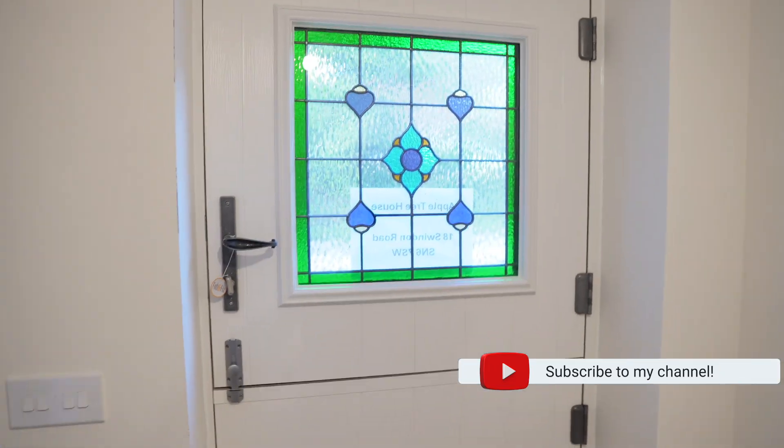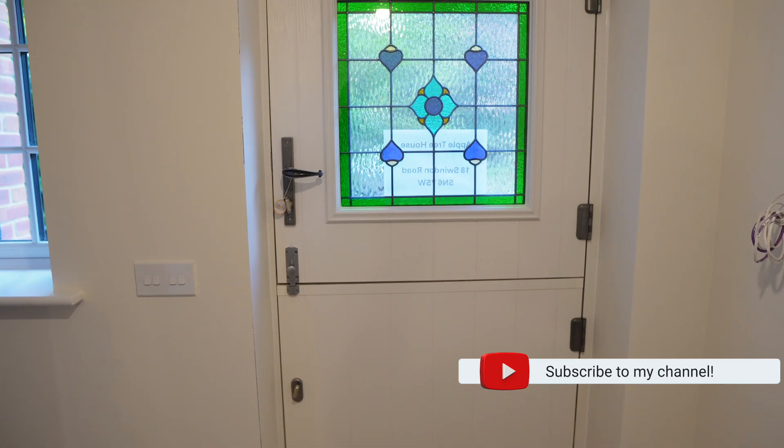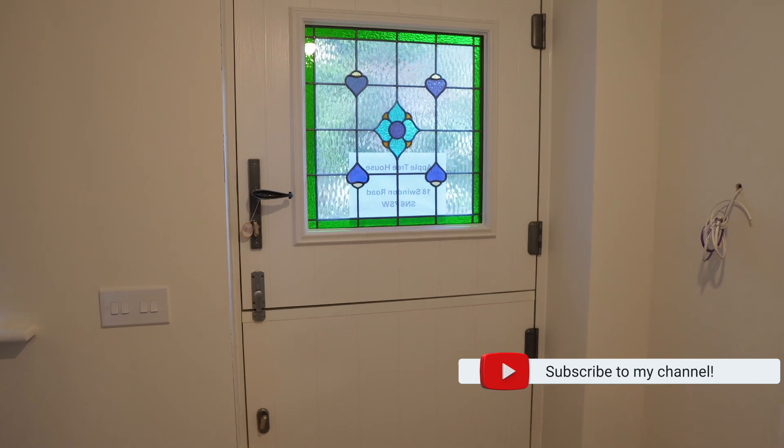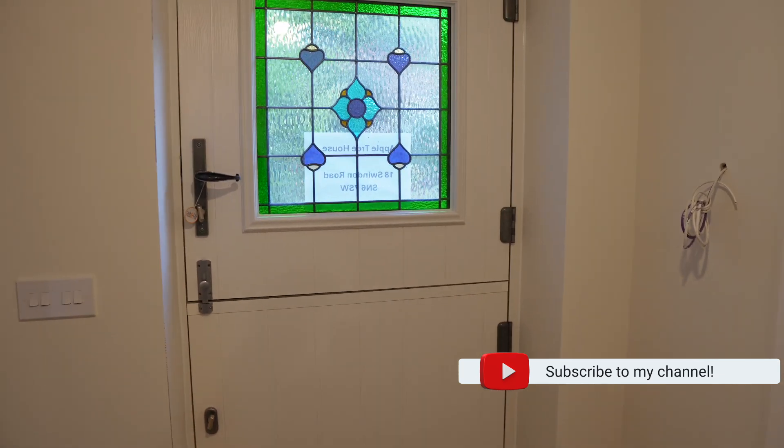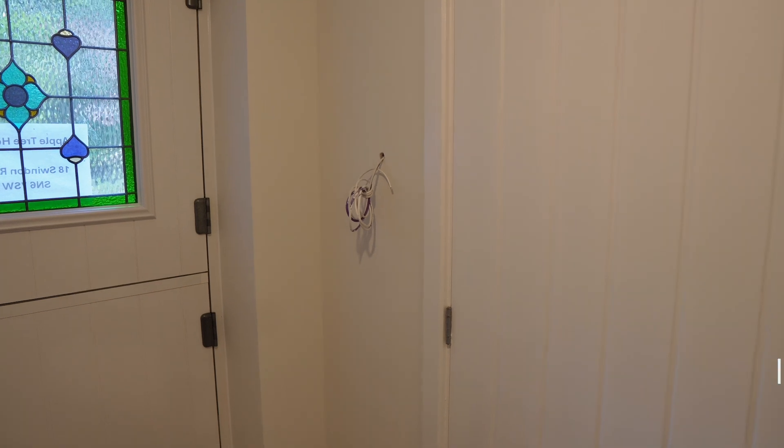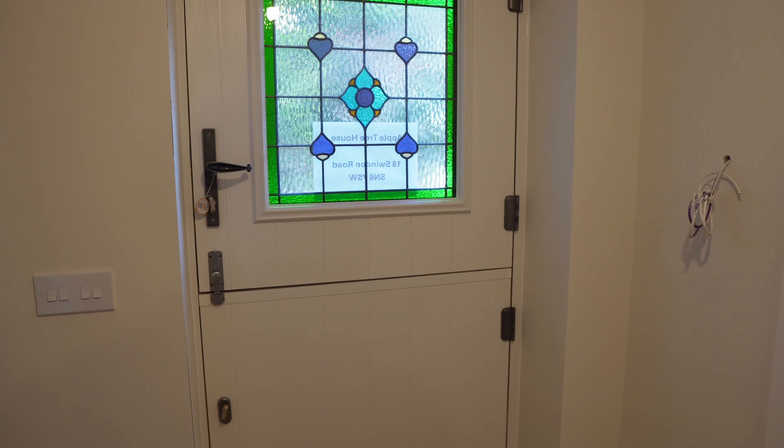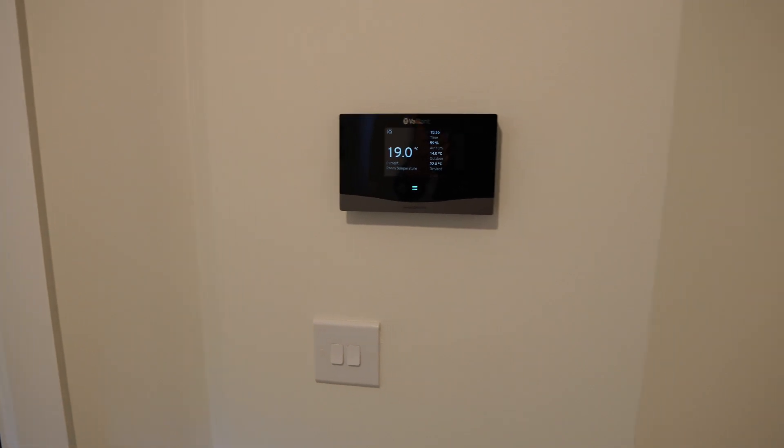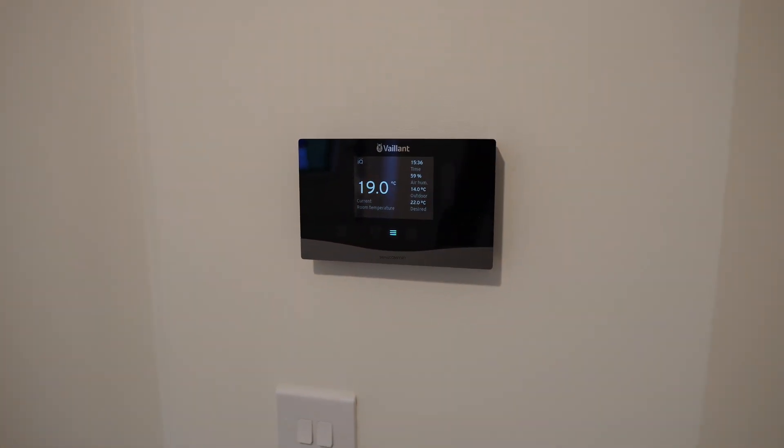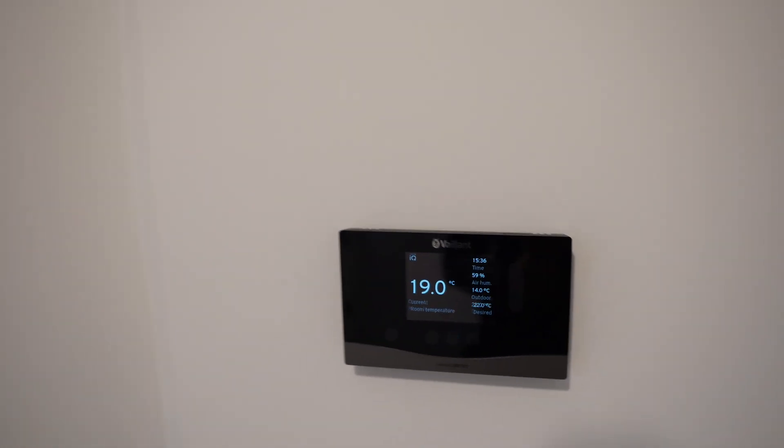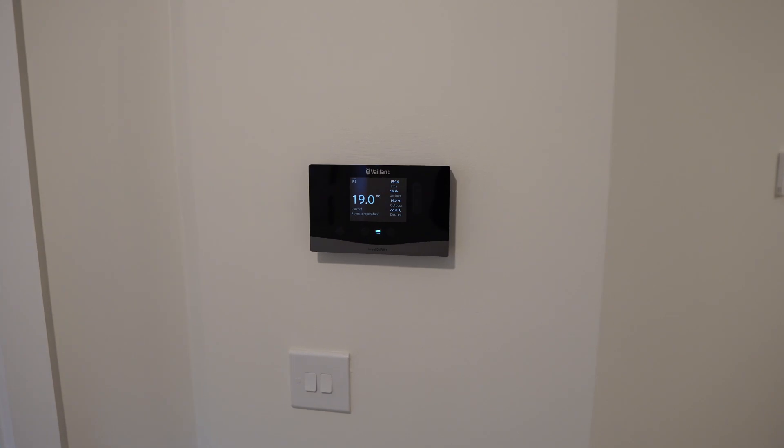So this is the front door. This is a stable front door so as you can see it's in two halves. So you can open up the top half separately which is quite good because I've got a dog so it's quite convenient. Excuse a couple of the wires so this is for eventually when I'm going to have a gate out the front and control intercom.